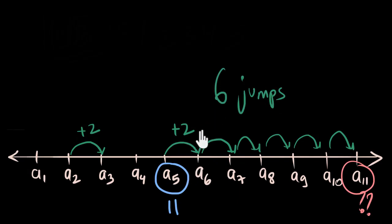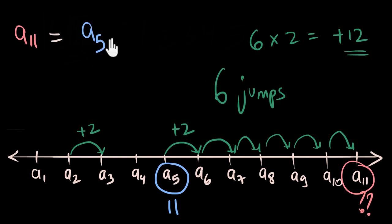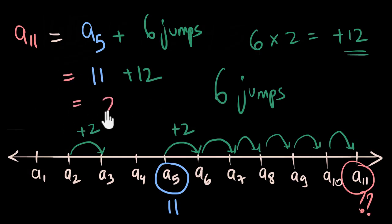If each jump is 2 units, all 6 jumps together will be 6 times 2, which is 12 units. This is really useful because that's what we're doing when moving from the 5th term to the 11th term. The 11th term is our 5th term plus these 6 jumps. We know the jumps total 12 units and the 5th term is 11, so the 11th term is 11 plus 12, which is 23. That's our answer.